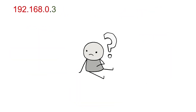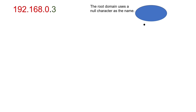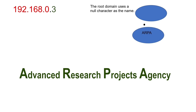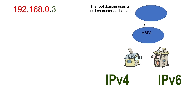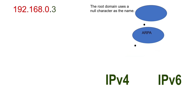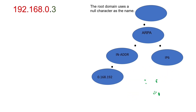Since IP addresses do not include domain names, developers used a different approach to build a domain tree for IP addresses in the DNS namespace. They created a domain called ARPA as a child domain of the root domain and used it to build a domain tree for IP addresses. There are two versions of IP addresses: IPv4 and IPv6. To keep the addresses of both versions separate, they created two additional child domains of ARPA: the in-addr domain for IPv4 addresses and the ip6 domain for IPv6 addresses. They constructed the domain tree for both versions inside their respective domains.